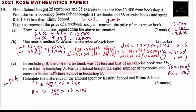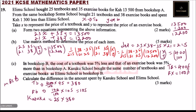Because Kasuku bought the same number of textbooks and exercise books as Erimu, we calculate: 25 textbooks at 380 shillings each plus 35 exercise books at 105 shillings each. Adding those together, Kasuku spent 10,175 shillings.